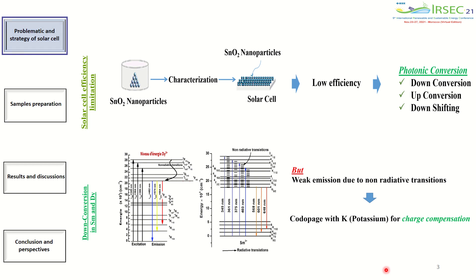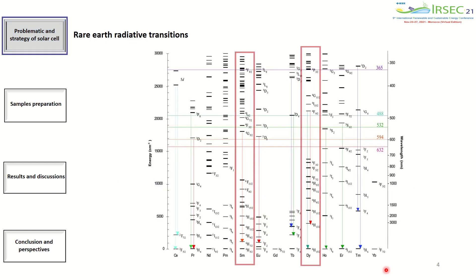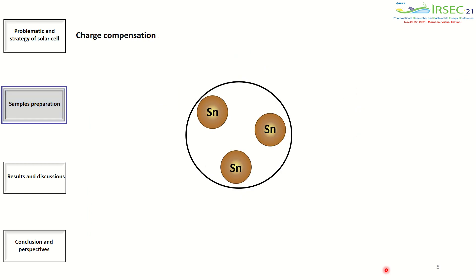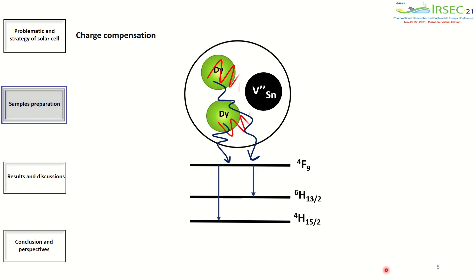In this context, the use of impurities such as rare earth elements in a host matrix can give rise to luminescent materials covering the entire visible range. In this study, we will focus on samarium and dysprosium. In general, in SnO₂ doped with dysprosium, the rare earth occupies the Sn⁴⁺ site.